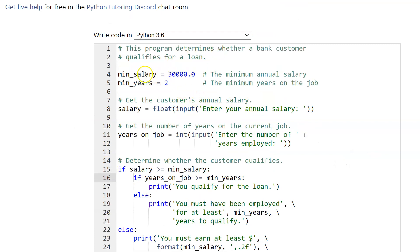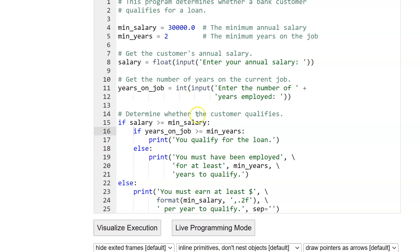At the top, you'll see we're just defining minimum salary, $30,000, minimum years, two. I know I harp on this a lot, but I still think these are constants. I would capitalize those. And then we're asking for salary. We're asking for years on the job. So fairly simple as far as that piece goes.